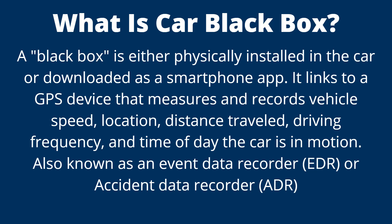A Car Black Box is either physically installed in a car or downloaded as a smartphone app. It links to a GPS device that measures and records vehicle speed, location, distance travelled, driving frequency, and the time of day the car is in motion. It is also known as Event Data Recorder (EDR) or Accident Data Recorder (ADR).